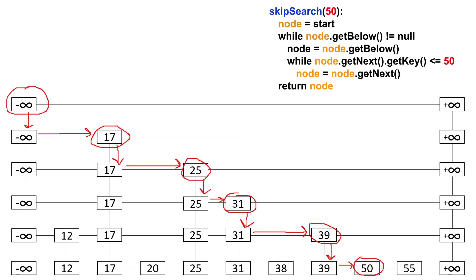You might think: why don't we just stop here when we see it's 50? That's because we're going to be using a generic utility method for searching, since searching, inserting, and deleting all use this general utility method. We always have to search for something before we can perform an action in a skip list. So now we ask: can we drop down another level? We cannot because its below reference is null. Whenever you can't drop down anymore, you're done. In the searching algorithm we then ask: is this node's key equal to the one we're searching for? The answer is yes, so we return this node.